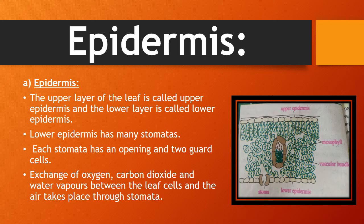Each stomata has an opening and two guard cells. You can see in this picture that every stomata has an opening and two guard cells. Their guard cells guide the opening. Exchange of oxygen, carbon dioxide, and water vapors between the leaf cells and the air takes place through the stomata. The guard cells guard the opening and allow the exchange of gases between the cells of the leaf and the air.